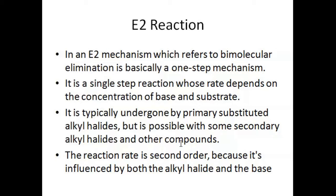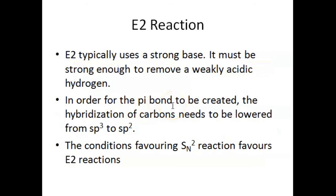The reaction rate is considered second-order because it is influenced by both the alkyl halide and the base, which is why it is called E2. E2 uses a strong base that must be strong enough to remove a weakly acidic hydrogen. For the pi bond to be created, the hybridization of the carbon must be lowered from sp3 to sp2, and the conditions that favour SN2 reactions will also favour E2 reactions.